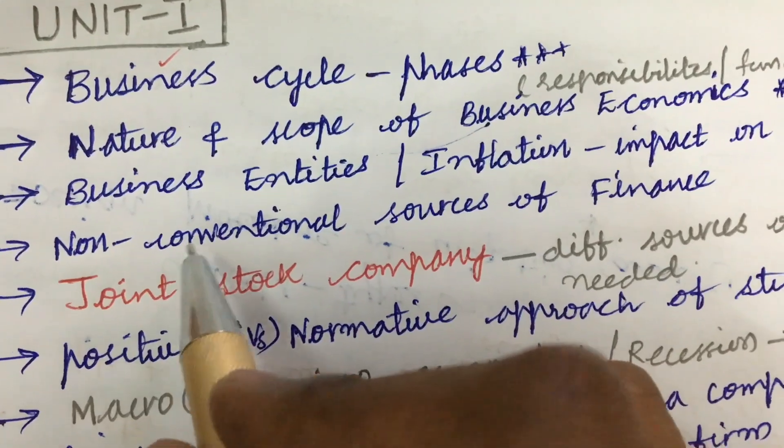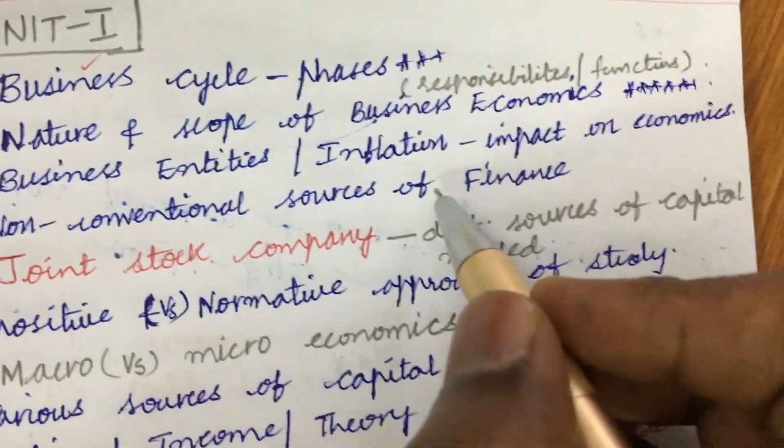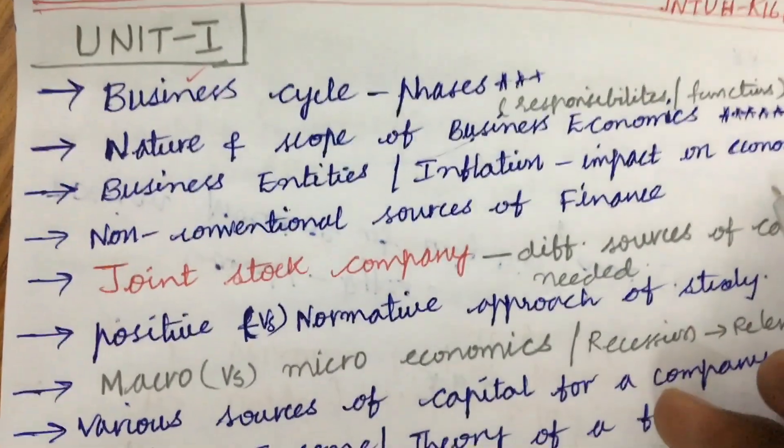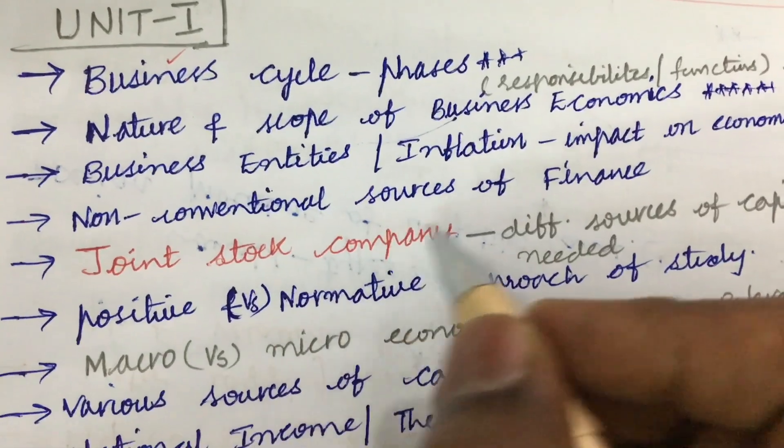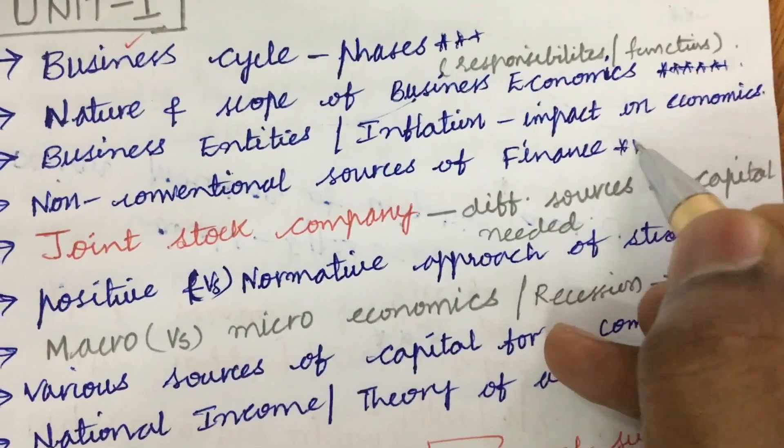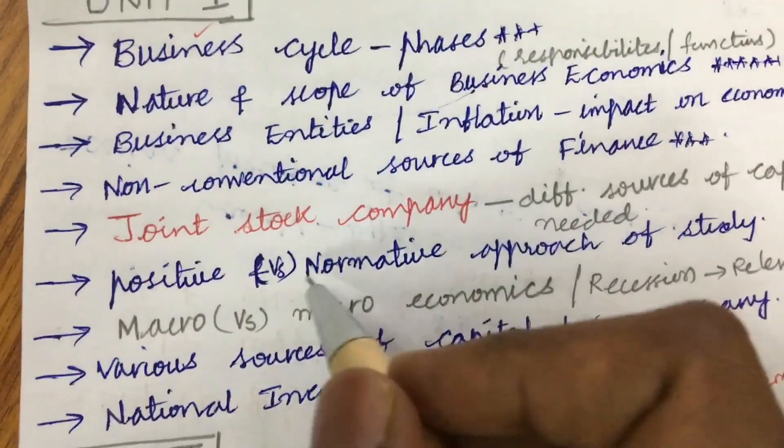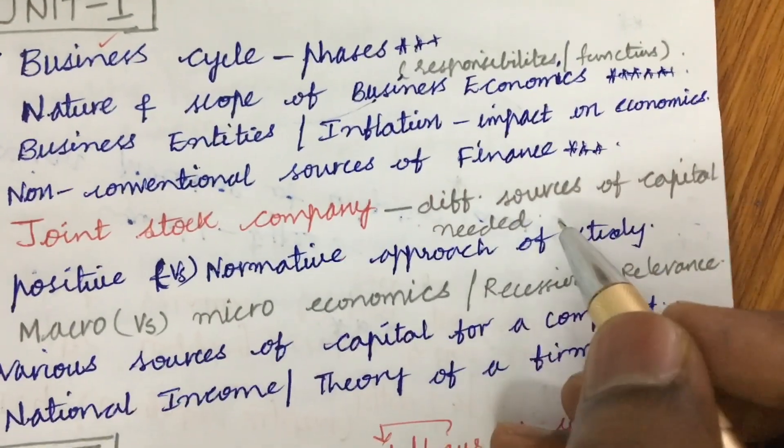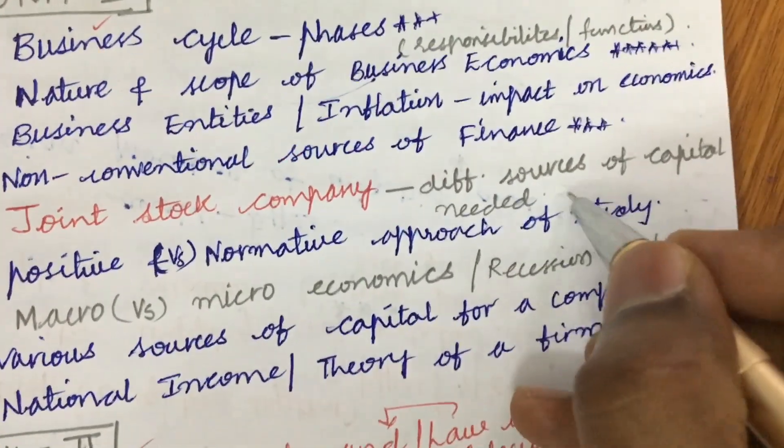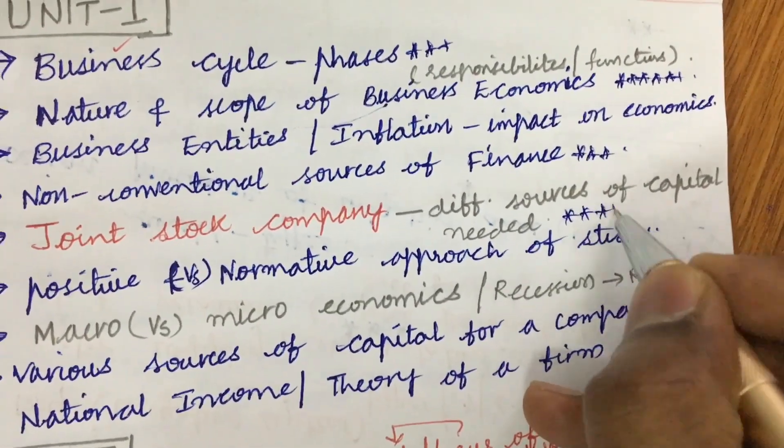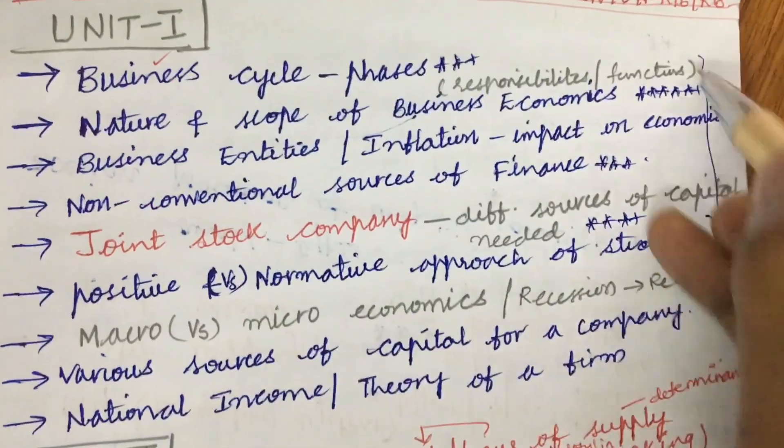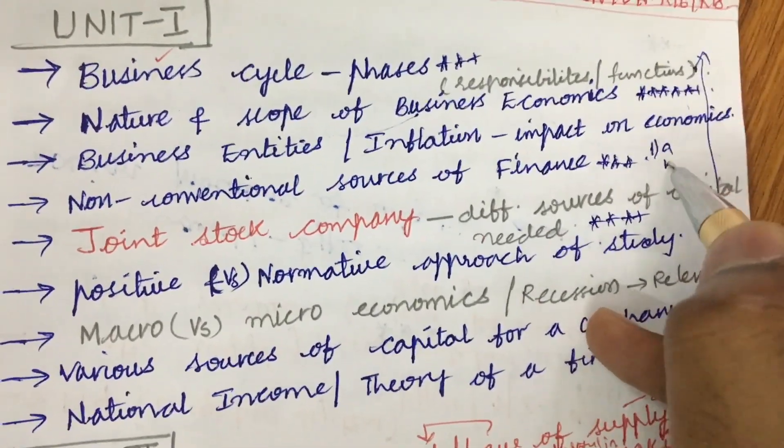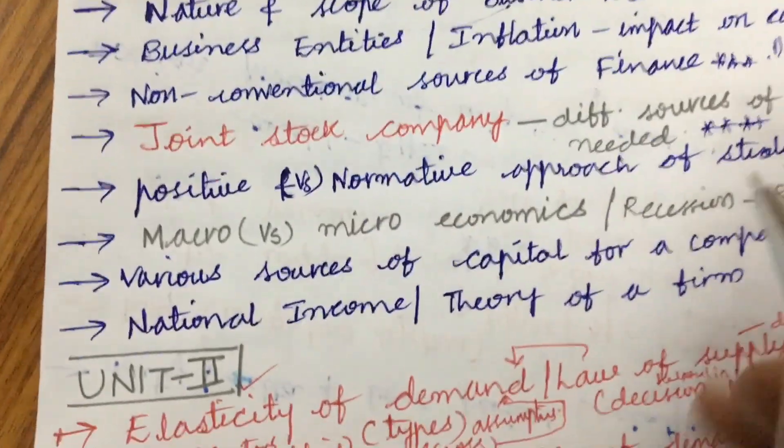Later, explain business entities as well as inflation and the impact of economics. Non-conventional sources of finance is also a 5-mark question. The joint stock company and the different sources of capital needed under this is also one of the sure-shot questions. We can expect 1A as well as 1B from these concepts, please work out accordingly.